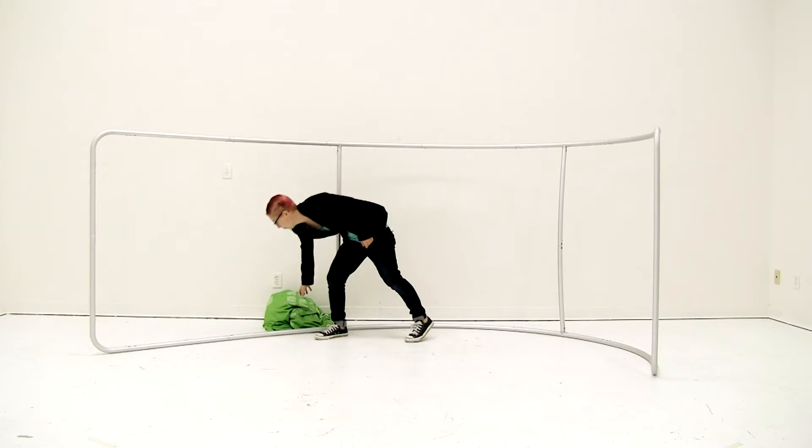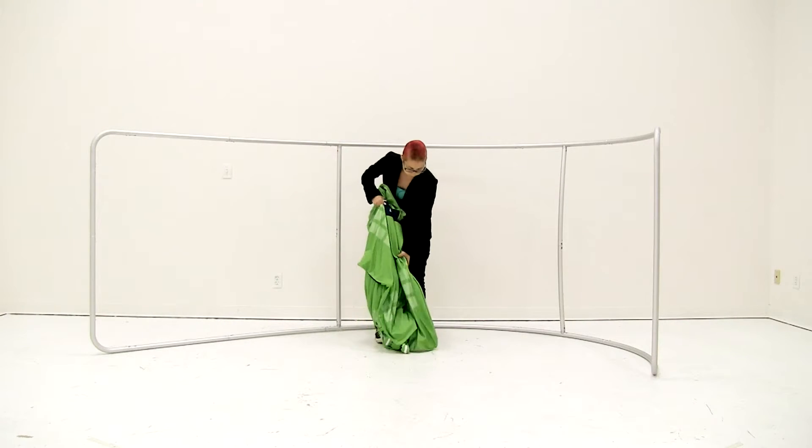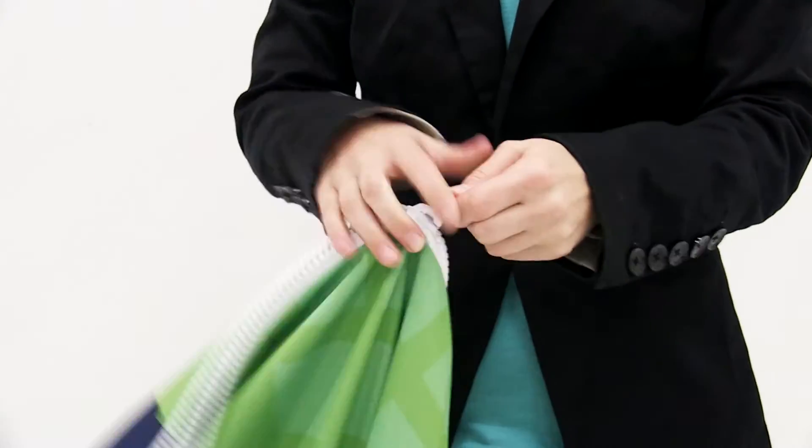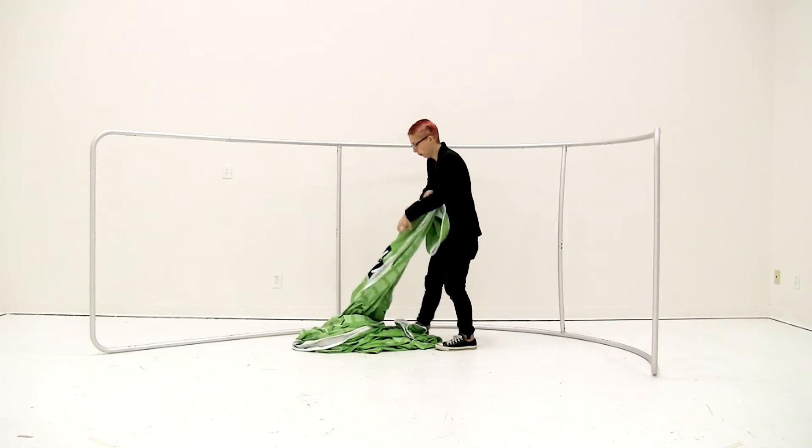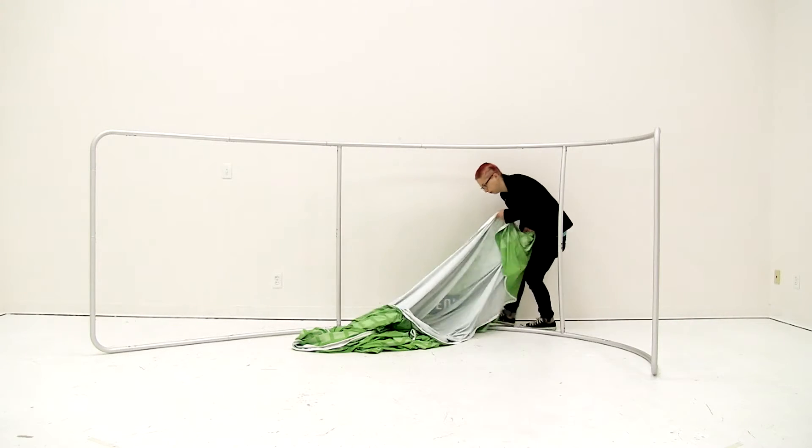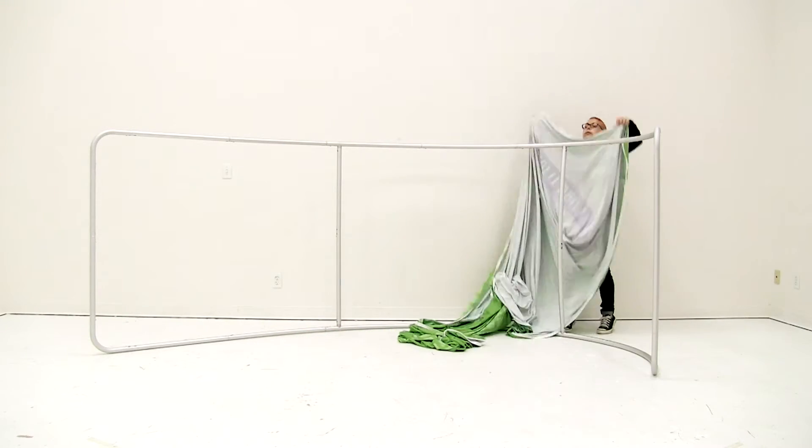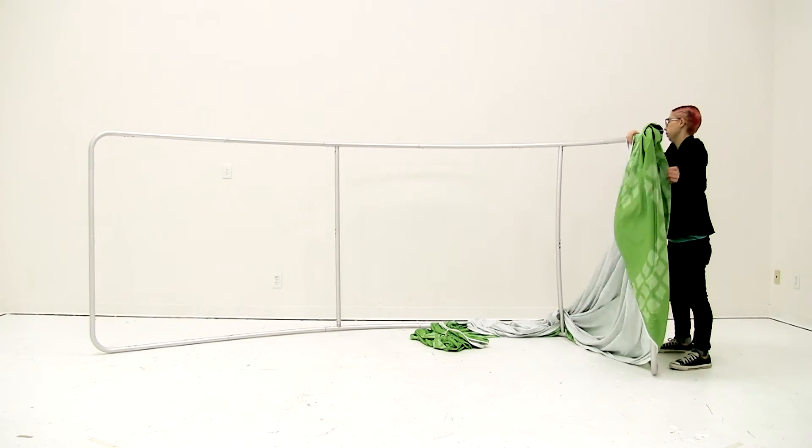Now that I have my frame set up, the next thing I'm going to do is unzip my graphic. I'm just going to toss my graphic over the frame, making sure that the zipper is at the bottom. You're just going to line up the corners with the corners.